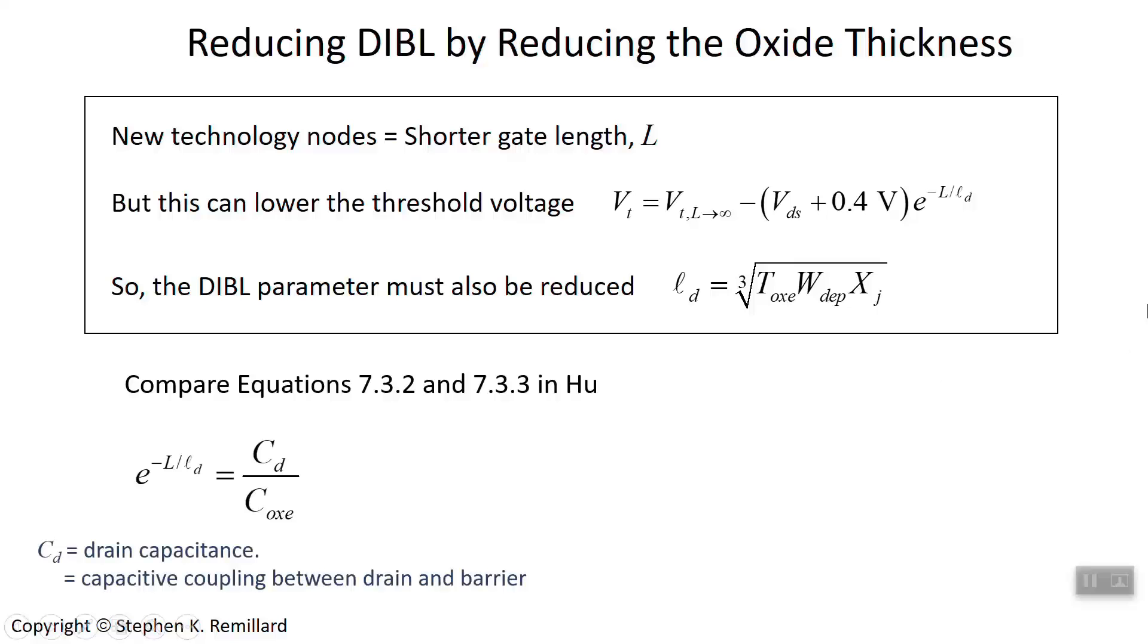If you compare them, you can only come to the conclusion that the exponential e to the minus L over the DIBL parameter is actually the ratio of the drain capacitance to the electrical oxide capacitance.